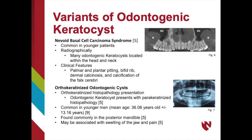There is also the orthokeratinized odontogenic cyst, or OOC, which varies slightly from the OKC. The OOC will have orthokeratinized epithelium rather than parakeratinized epithelium, as in the case of the OKC. These cysts are common in younger men, with a mean age of 36 years, and are most commonly found in the posterior mandible. They may be associated with swelling of the jaw and pain. Figure 6 shows multiple OKCs with Gorlin syndrome, and Figure 7 shows a radiolucency in the posterior mandible that is an OOC with orthokeratinized epithelium.